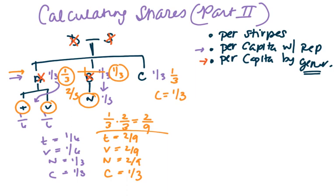Per capita by generation emphasizes fairness and equality in the distribution at the generation level. That's why it requires the pooling of the dropped shares, so that each person at a particular generation, like T, V, and N, they all get an equal share.